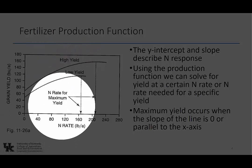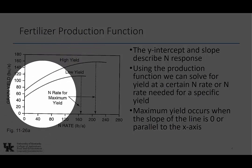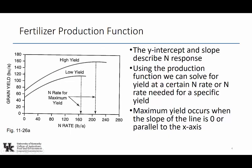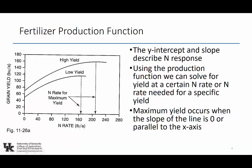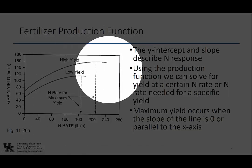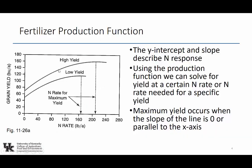The slope is steeper in the high-yielding field — every 40 pounds added goes up more bushels than in the low-yielding field. Maybe the high-yielding field gives 50 bushels for 40 pounds, versus 40 bushels in the low-yielding field. So the slope is the change in Y (grain yield) over the change in X (nitrogen rate). We can use this production function to solve for yield at any nitrogen rate, or solve the other way for nitrogen rate at a specific yield. The maximum yield occurs when the slope of the line is zero.